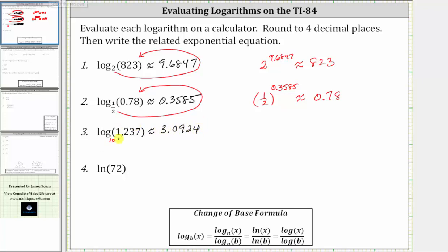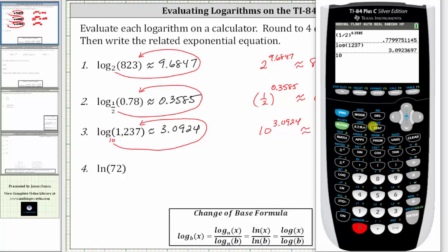The related exponential equation is 10 raised to the power of 3.0924 is approximately 1,237. Let's verify, and we do get approximately 1,237.